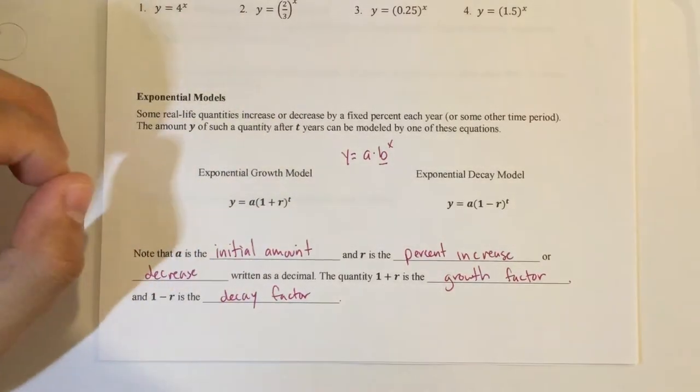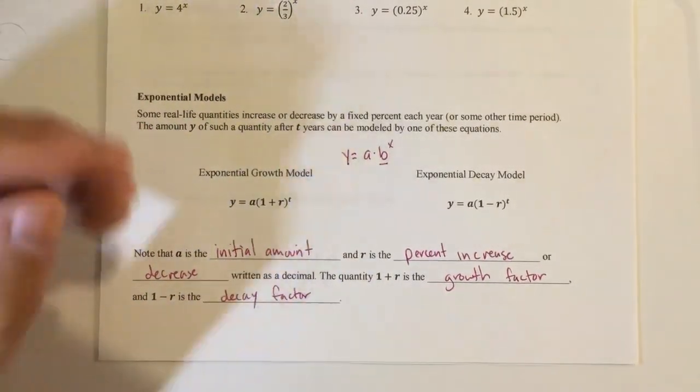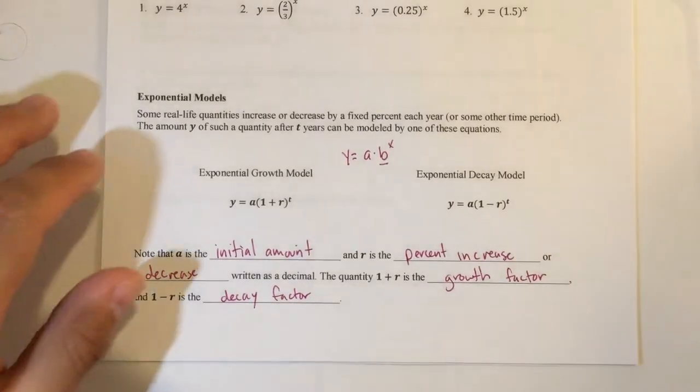So key words when you're doing a growth model, you know, appreciate, grow, something that increases, something to talk about getting bigger. Getting smaller is exponential decay, decrease, depreciate, and so on. Alright.